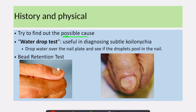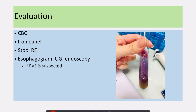History and physical examination are important to identify the possible cause. We need to ask about the history of anemia or symptoms of anemia. If koilonychia is present, we can confirm that finding by using the water drop test, in which a drop of water is dropped over the nail plate to see if the droplets pool in the nail, as shown in this picture. Similarly, the bead retention test can be done, where a small bead is placed on the nail plate to see if the bead is retained in the nail or not. Evaluation involves finding the underlying cause.